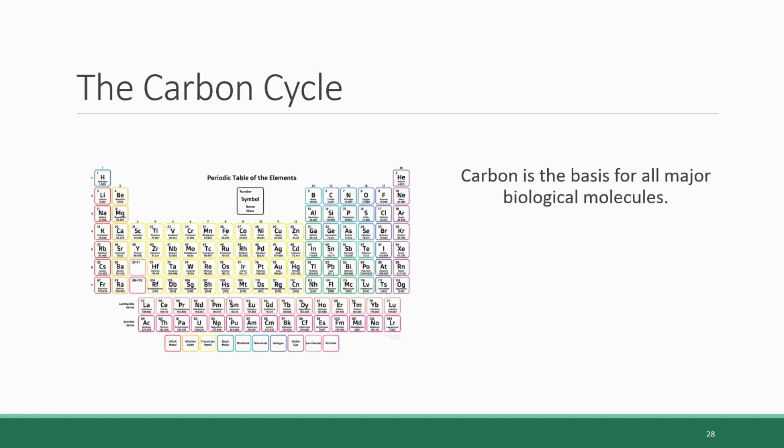We probably already have a good handle on one of the major biogeochemical cycles from our discussions in chapter two, and that is the carbon cycle. Carbon is an extremely important element for living organisms. In fact, it's the basis for all of the essential organic molecules, like DNA, proteins, carbohydrates, and fats.